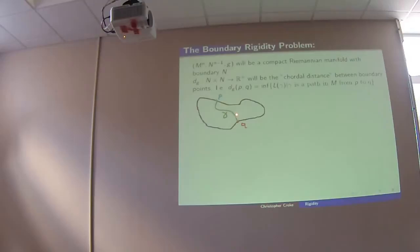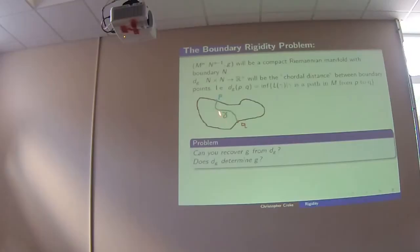That is, the two points are on the boundary, and you look at paths gamma running from P to Q, and you take the infimum of the lengths of such paths. That's the distance through the inside, as opposed to the distance around the boundary, which would be a different answer. So we're looking at the chordal distance. And here's the problem: the boundary rigidity problem is, can you recover the Riemannian metric on the inside if you know the distances between boundary points?